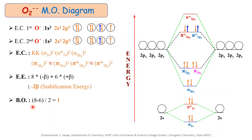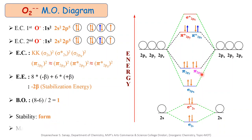Bond order = (8 − 6) / 2 = 1. This means there is formation of one bond between the two oxygen ions. The molecule is stable due to evolution of energy and a bond order of 1. Regarding magnetic property, since there are no unpaired electrons — all electrons are paired — the O2 2-minus ion is diamagnetic in nature.